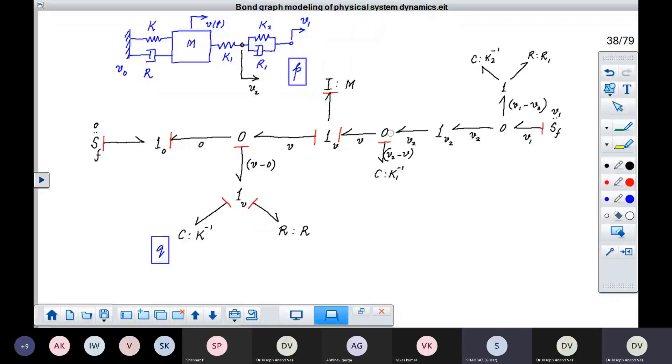And a bond has brought in information of effort into the zero junction. All the other bonds have to accept it. So this junction is completely causaled. Effort has come into this one junction. So it has to, only one bond can bring in information of flow. So it has to be like this.